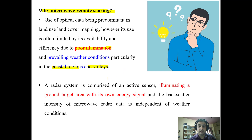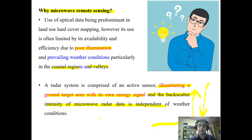A radar system illuminates a ground target with its own energy signal and in return receives a backscatter — not reflectance as in optical remote sensing, but backscatter intensity. This makes microwave remote sensing independent of weather conditions, as already described.